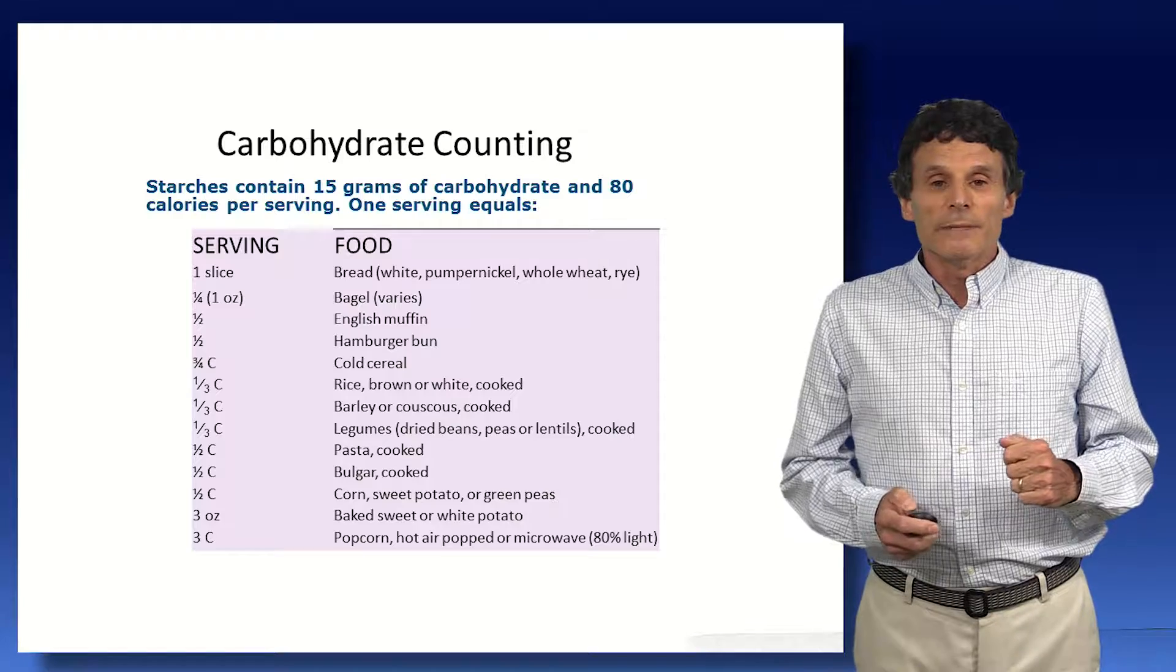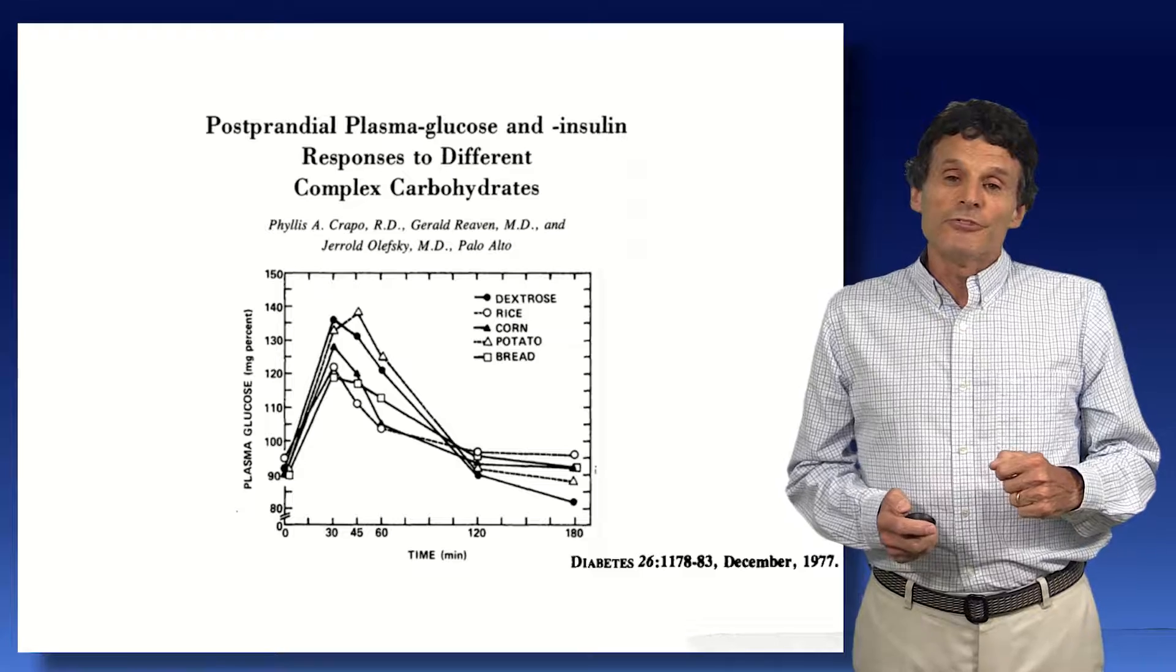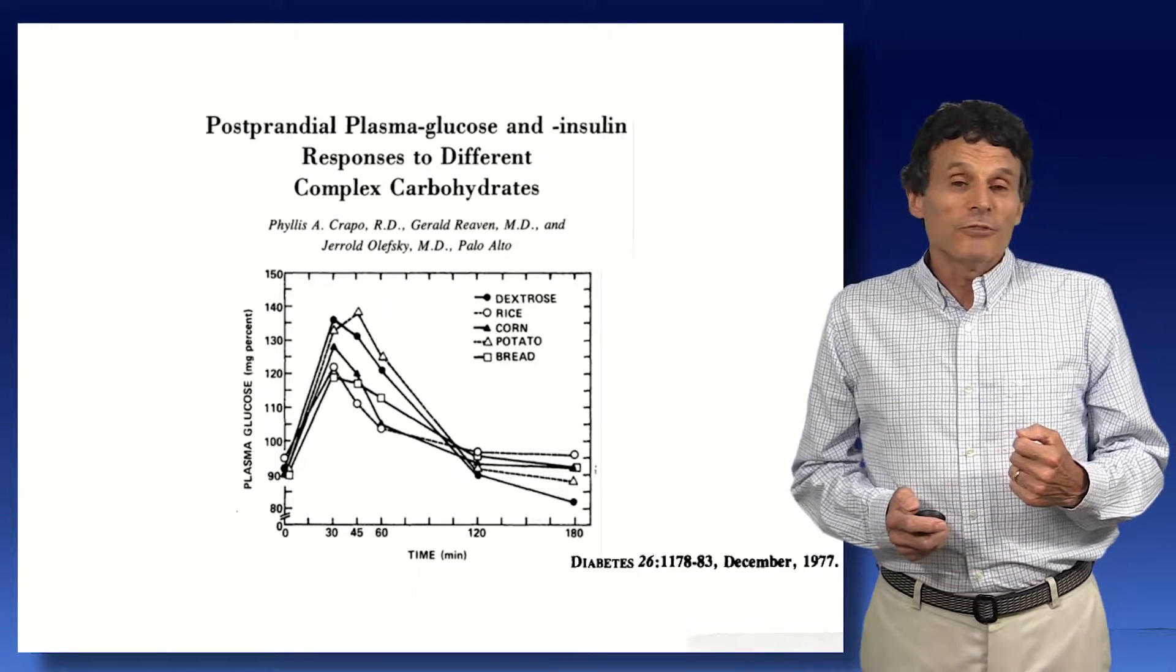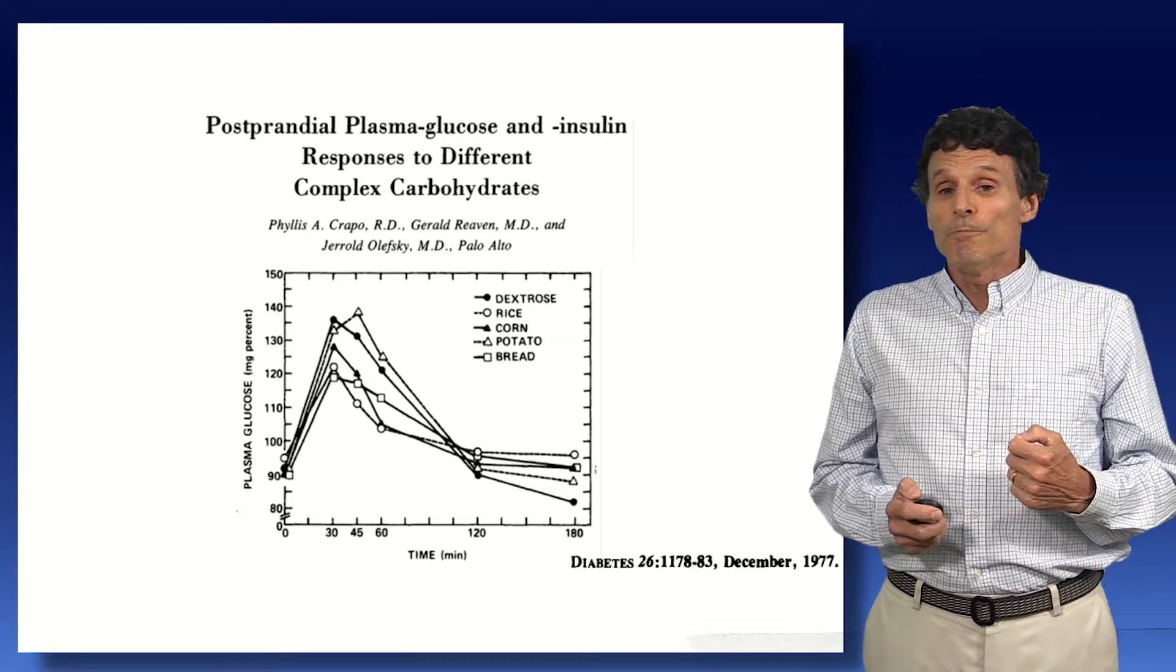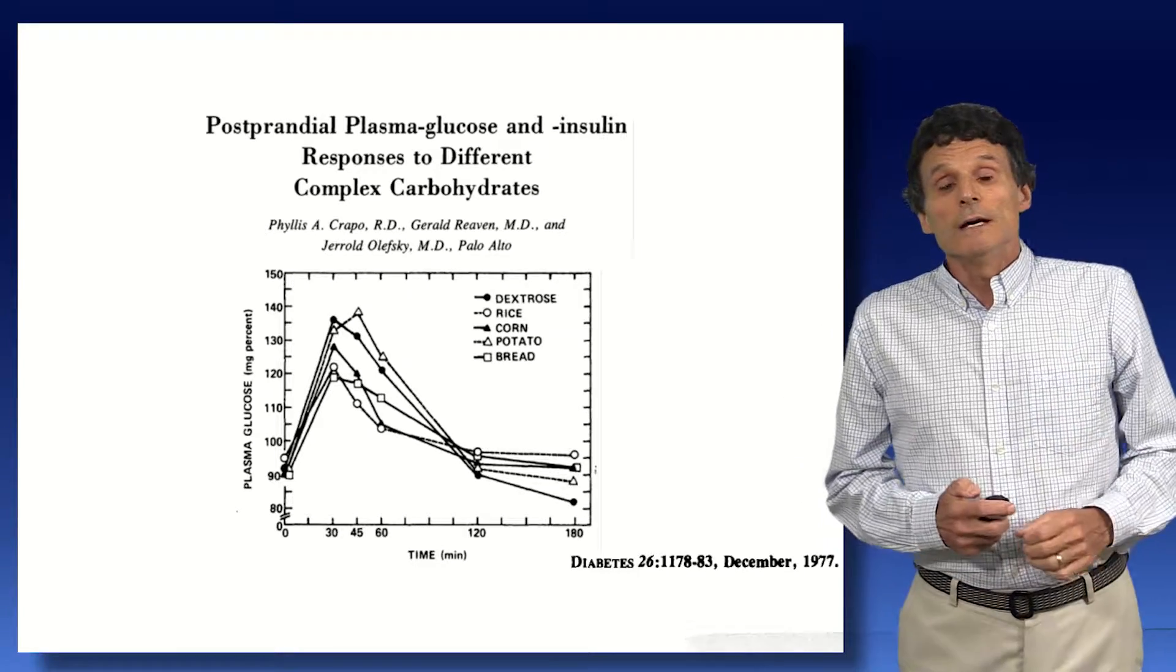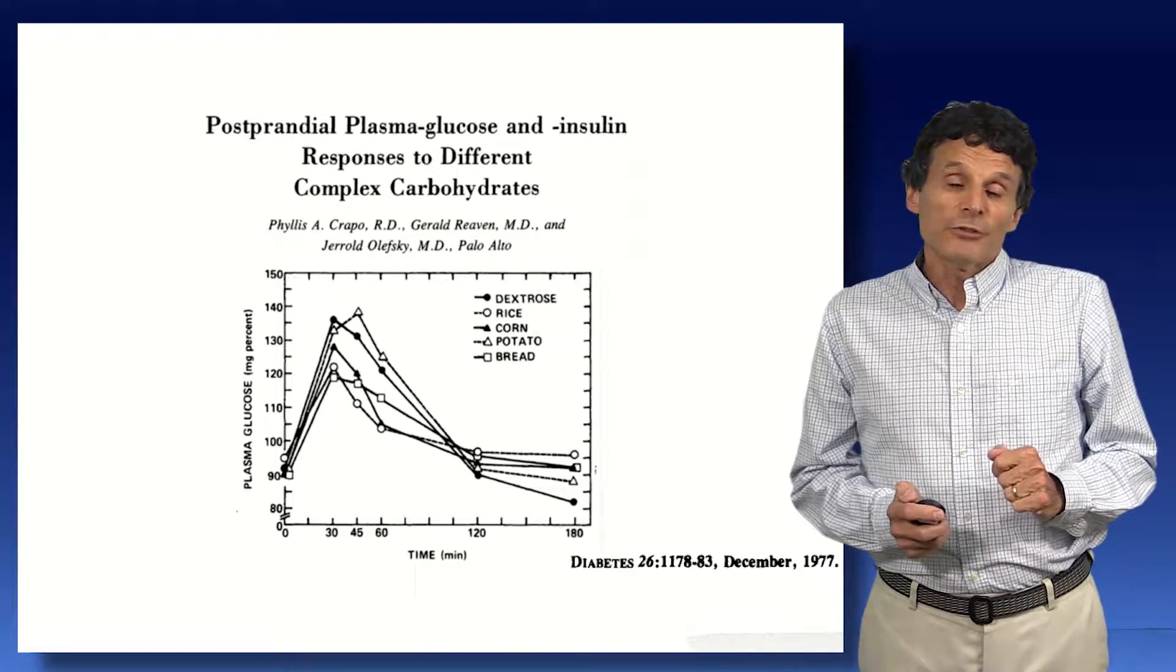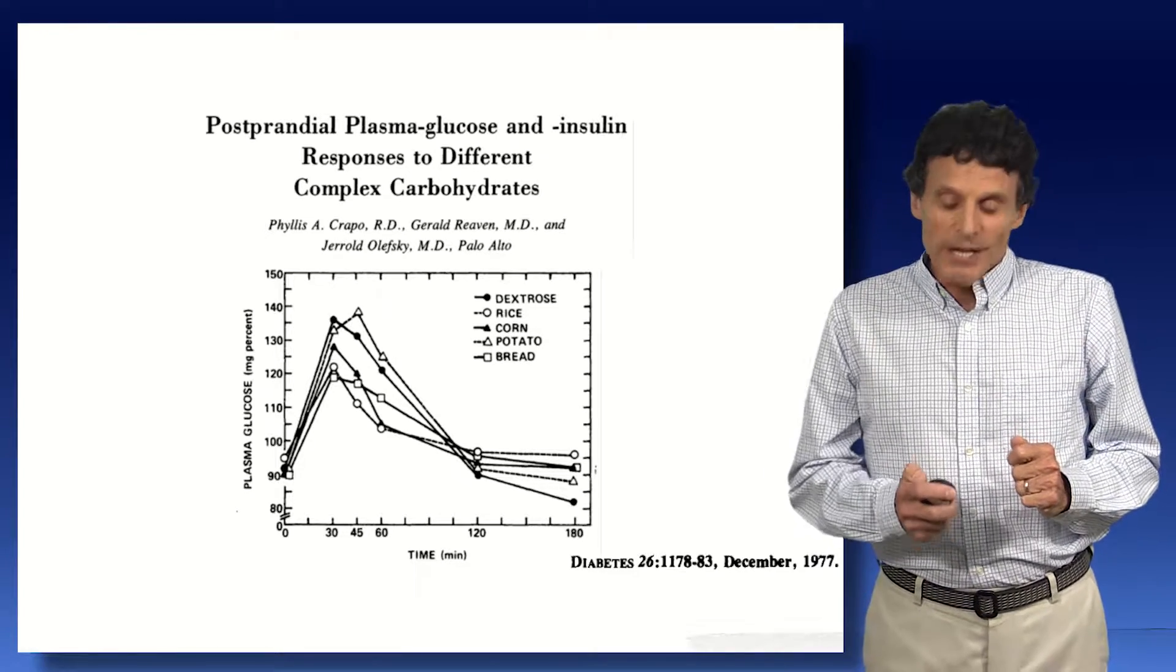Now around about the mid-1970s, people had been finding that in fact different foods did elicit different glycemic responses. This is an early study from Jerry Riven's group. Jerry Riven is famous for developing the insulin resistance concept and the metabolic syndrome. And they showed that potato, for example, in this slide, elicited a similar response to glucose, whereas corn and bread were somewhat lower. Ironically, although they were some of the first to describe these differences, they became some of the largest critics of the GI concept.